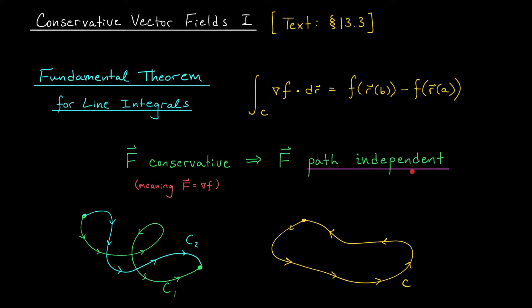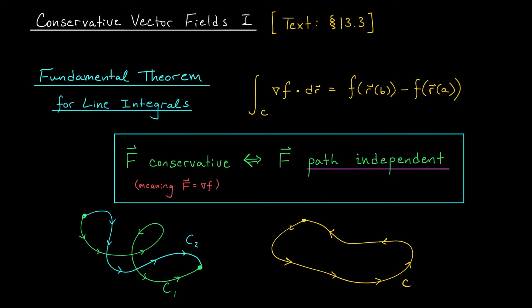Remarkably, the converse of this result is also true. If your vector field is path independent, then it must also be conservative. The proof is a little more involved, so I'm not going to do it here, but you're welcome to check it out in the textbook. You can also mine out some other cute results from the Fundamental Theorem, such as if you're integrating a conservative vector field along a loop where the starting and ending point is the same, the line integral is going to be zero.